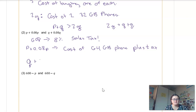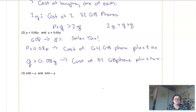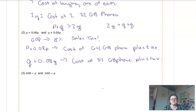Then if we look at the next one, it's just got Q's instead of P's. So Q plus 0.08Q is going to be the 32 gigabyte phone plus tax. If you said on your explanation that it was the cost plus 8% of the cost, that would work too, but I just hope that you might realize that 8% is sales tax. Then hopefully it should be pretty obvious which is going to cost more: the 64 gigabyte phone plus tax or the 32 gigabyte phone plus tax. The 64 gigabyte phone costs more, so it's still going to cost more when you put tax on. So P plus 0.08P is always going to be bigger than Q plus 0.08Q.